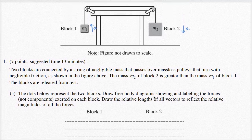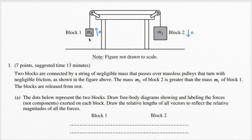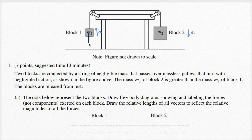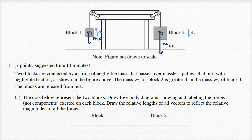Let's think about what forces are acting on each of these blocks. For each block, you're going to have the force of gravity — the weight of the blocks acting on them. For block one, the force of gravity is going to be its mass times the gravitational field, m1g. The force of gravity on block two is going to be larger — m2g — because m2 has a larger mass and we are in the same gravitational field.